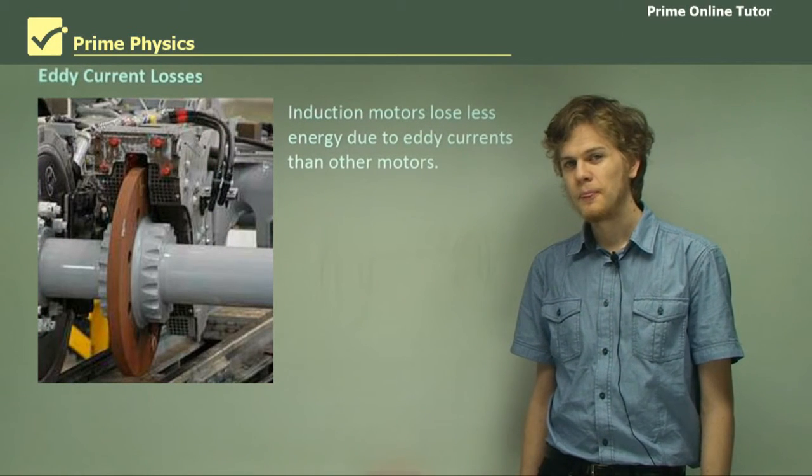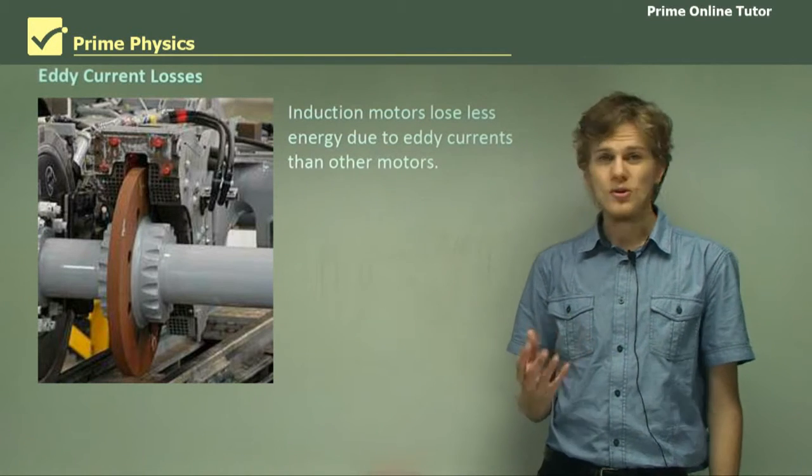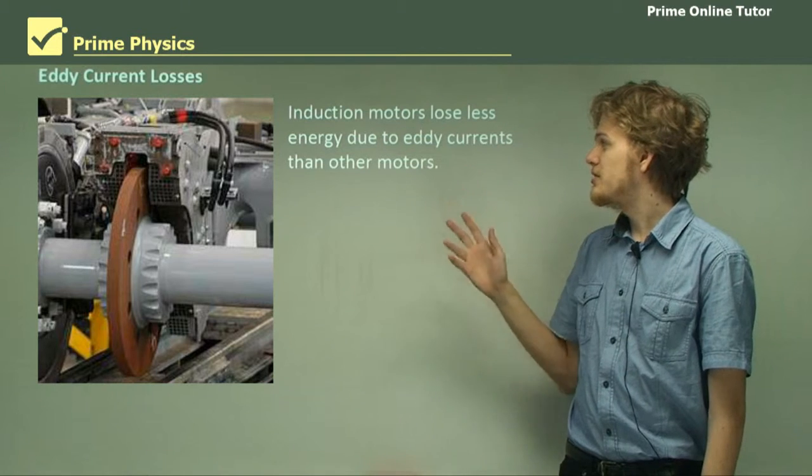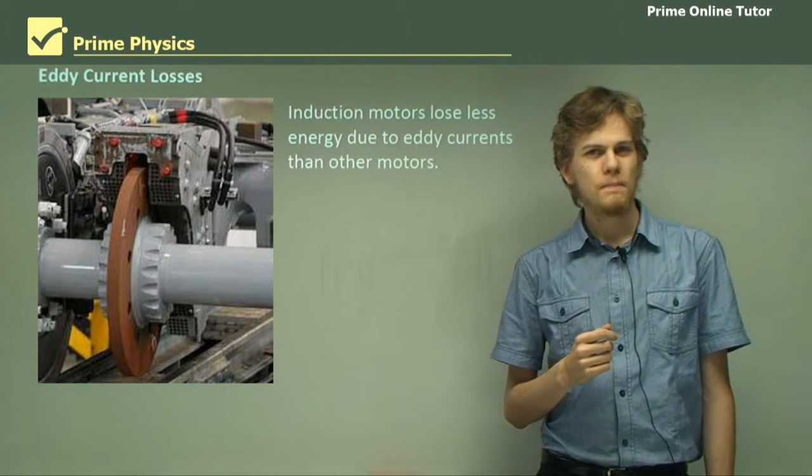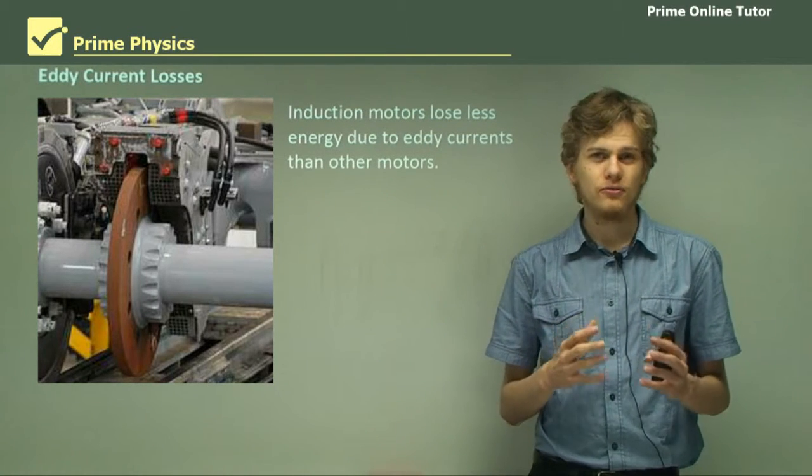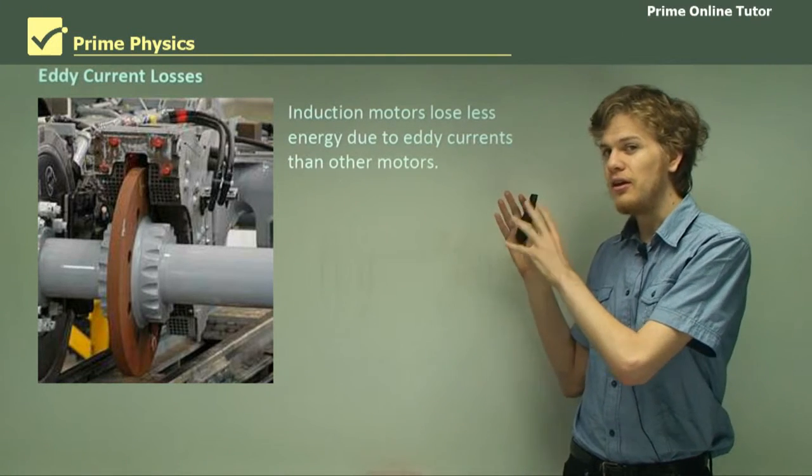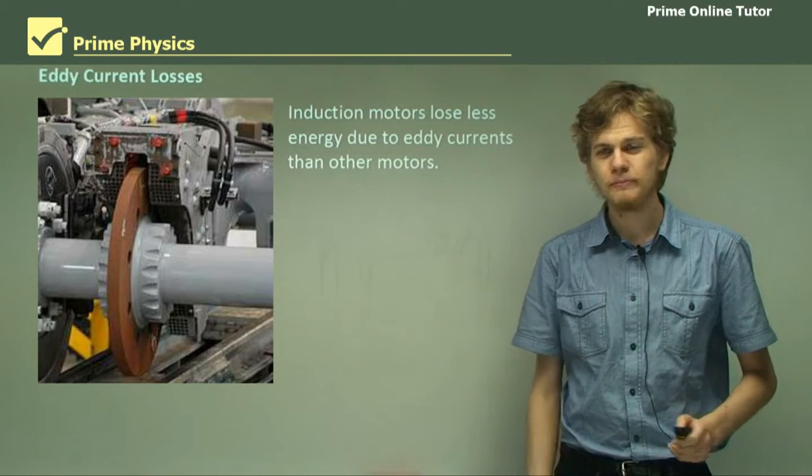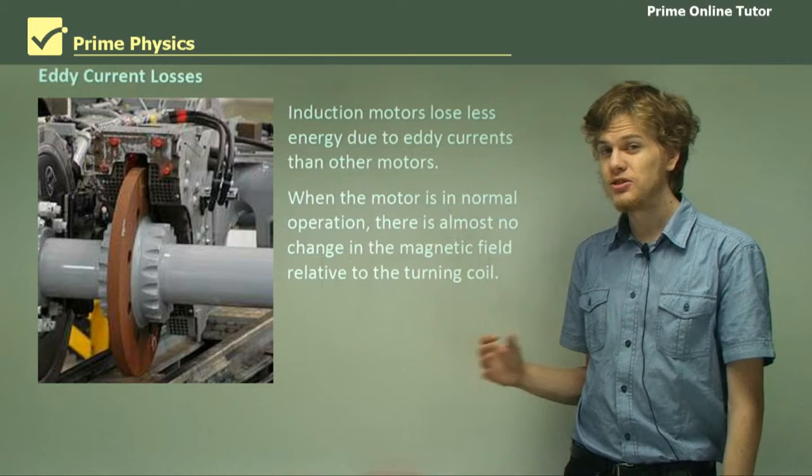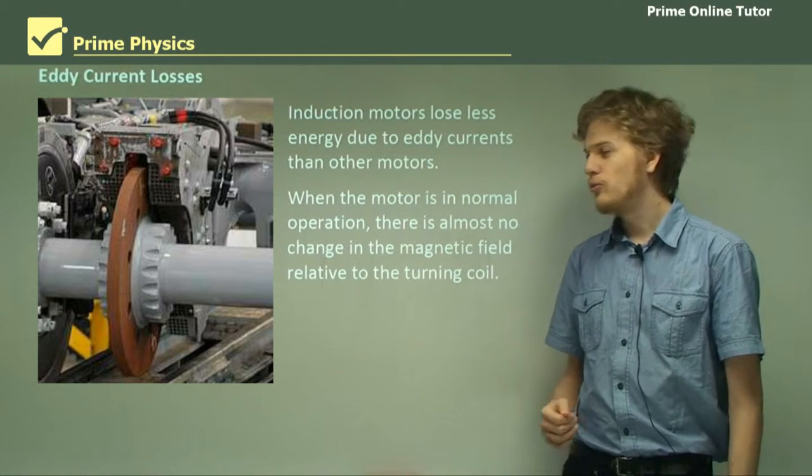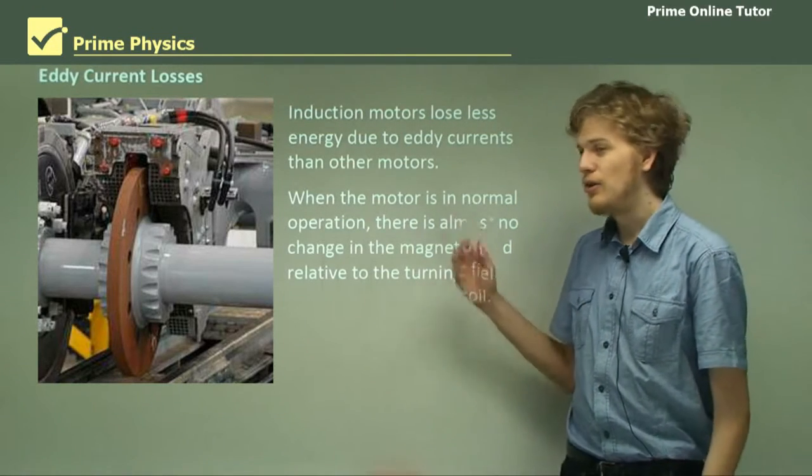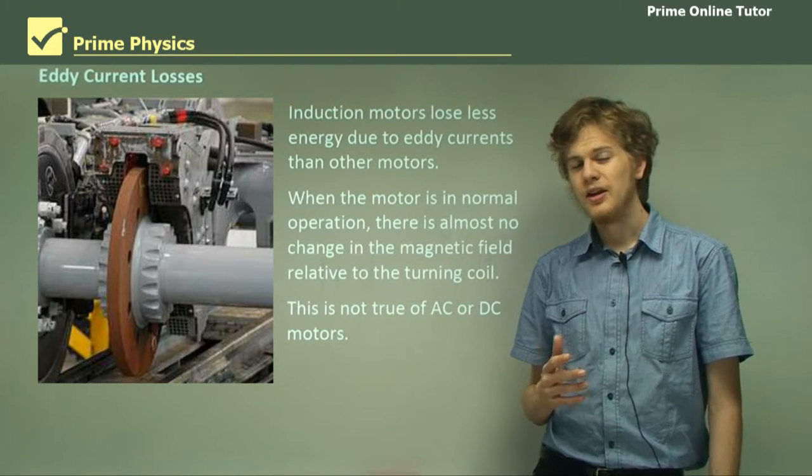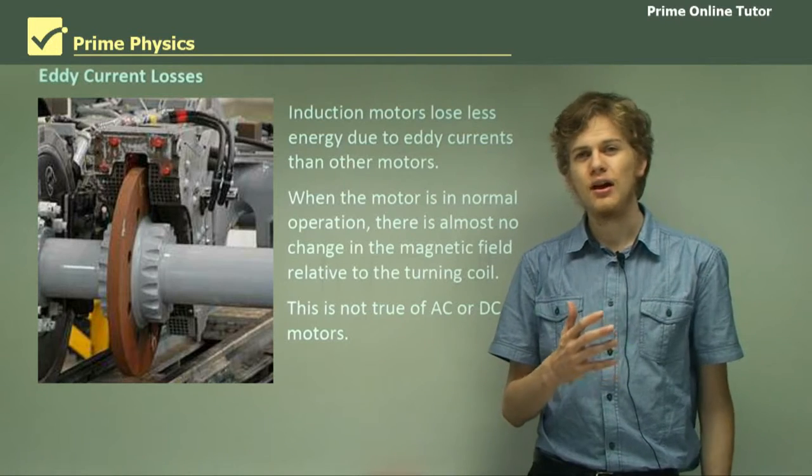How about eddy current losses? Remember that eddy currents are inevitably a part of loss when we run a motor. So induction motors once again come out on top. They lose less energy to eddy currents than other motors do. So why would this be? Well we know that when other motors are rotating they're always passing through a magnetic field. But when an AC induction motor is spinning it's passing through the magnetic field very slowly. It's always trying to catch up to that rotating magnetic field. So when the motor is in normal operation and it's not carrying a load, there is almost no change in magnetic field relative to the turning coil. And if we have no change in magnetic field that means no eddy currents. But this is not true of AC or DC motors that use brushes. In this case the coil will always be passing through a magnetic field and always be producing eddy currents.